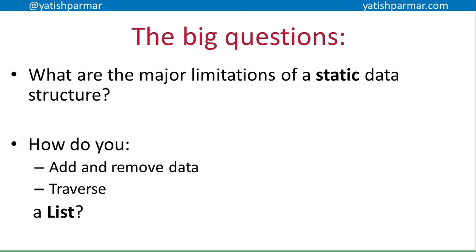The major limitations of static data structures are over-allocation of memory — wasting resources — or running out of space, because you can't guarantee what the user will do. You should be able to clearly explain how to add and remove data from serial and sequential lists using linked lists, and how to traverse a linked list to find your data. Watch out for the next video on queues.